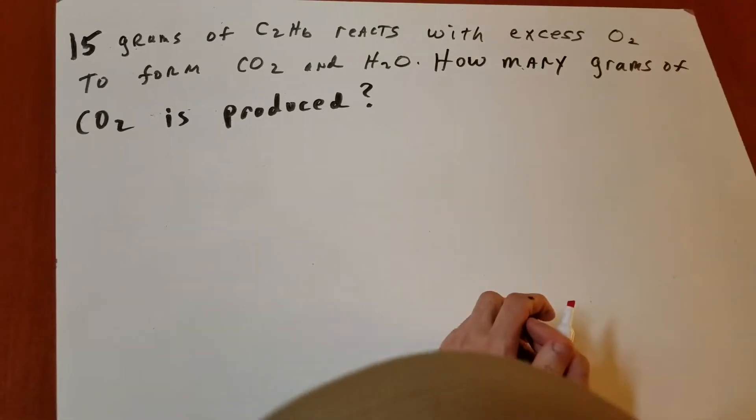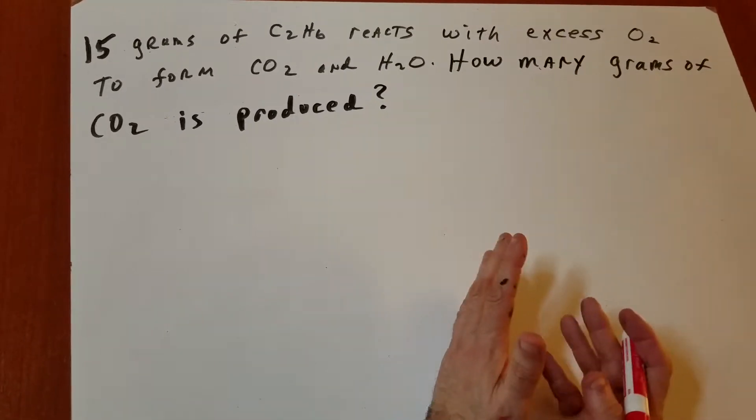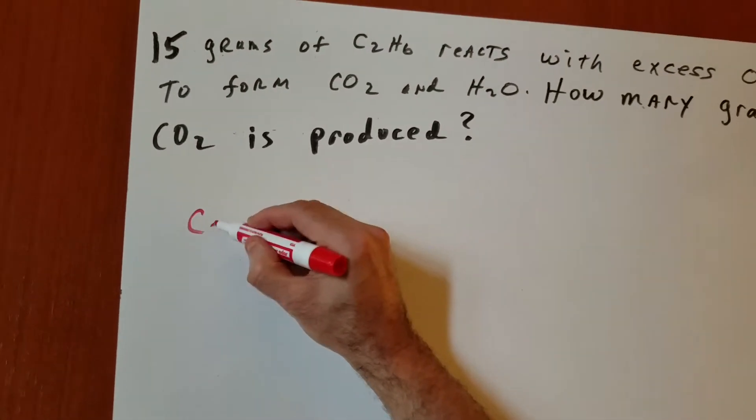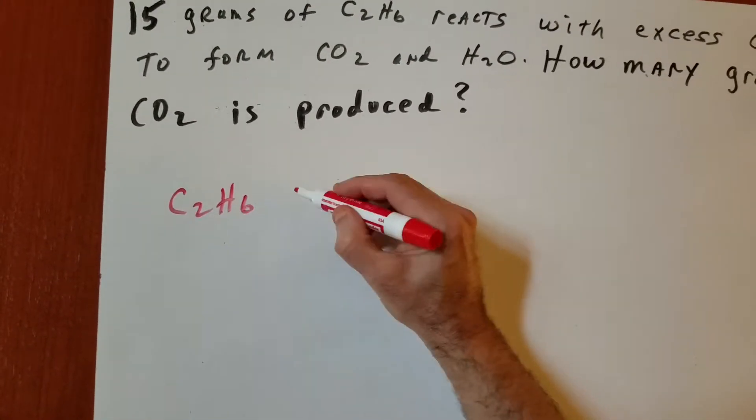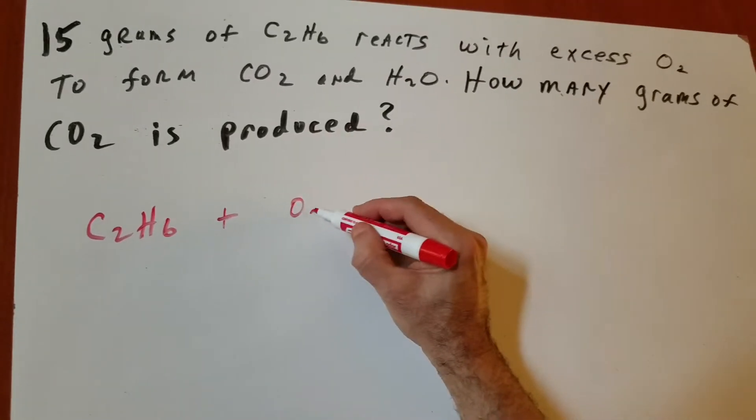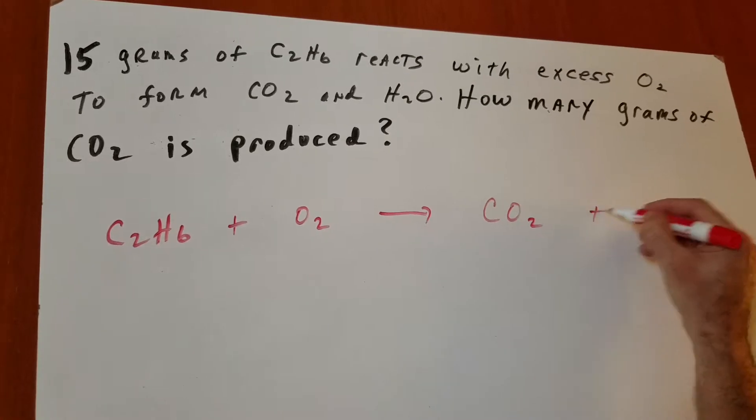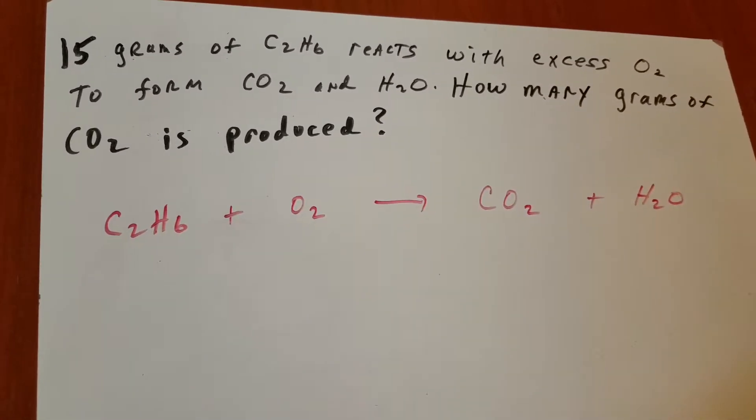The first thing we have to do in a problem like this is to write the equation if they don't do it for us. So let's take C2H6. We're going to add oxygen, and we are going to form CO2 and water.